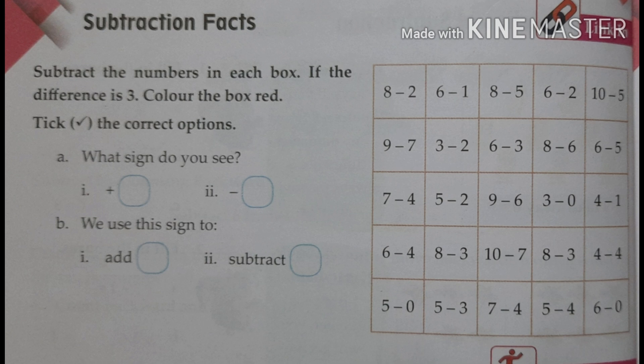So if you get 3, you will color that particular box red. And after that, tick the correct options are given. You will go through it. Okay?